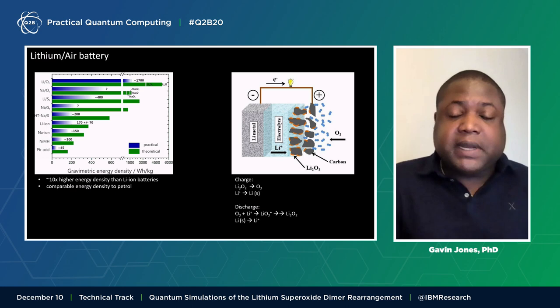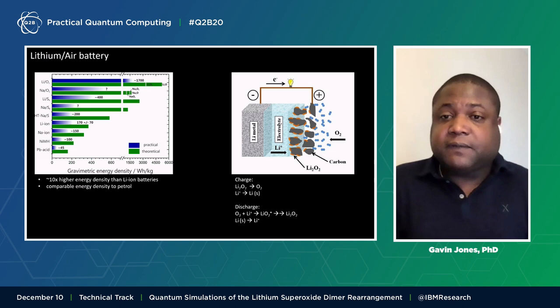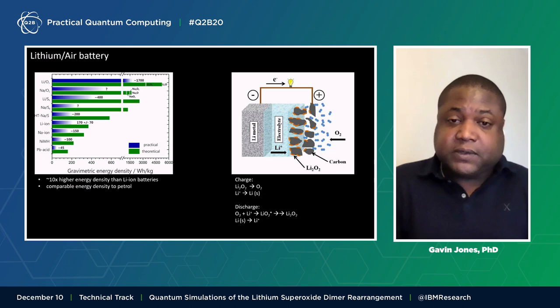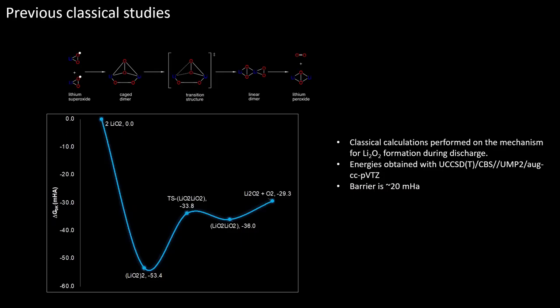The intermediate steps that occur during battery operation, in which exotic radical species are being generated, limit the performance of these batteries. And this is where quantum simulations could play a role in understanding these processes.